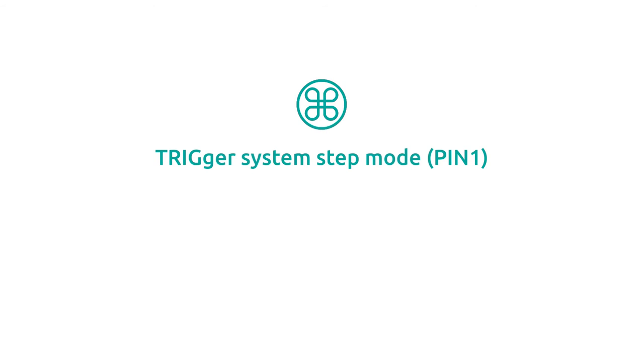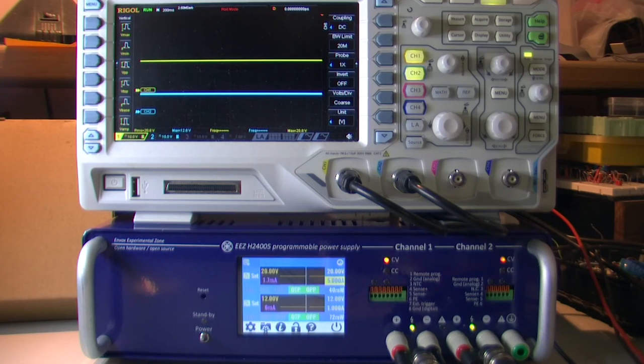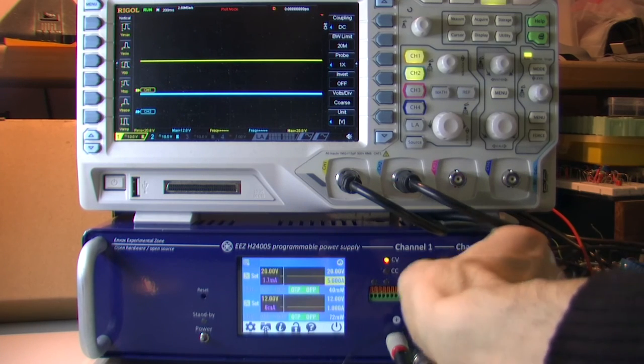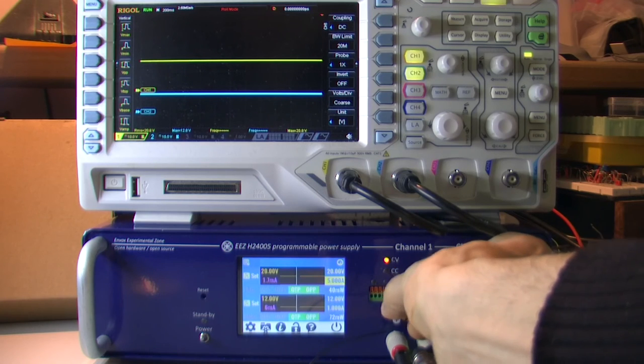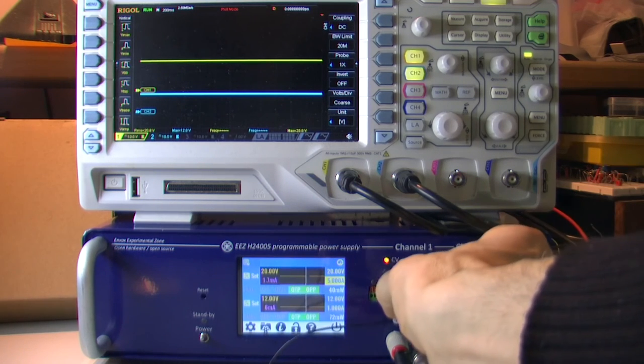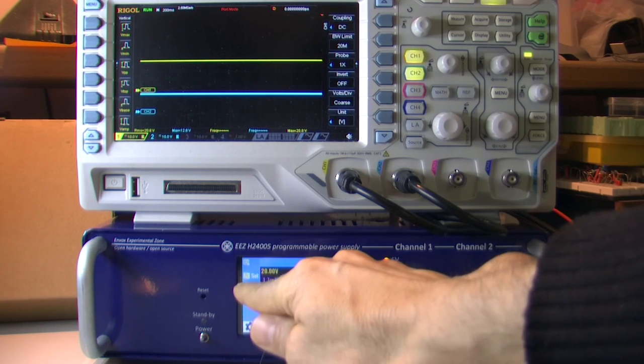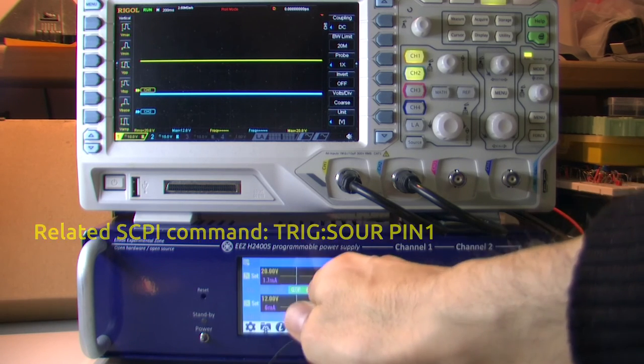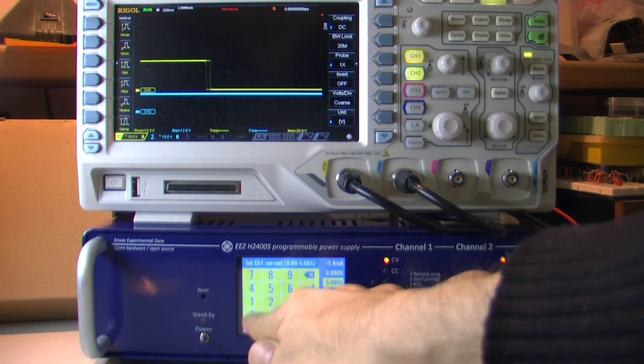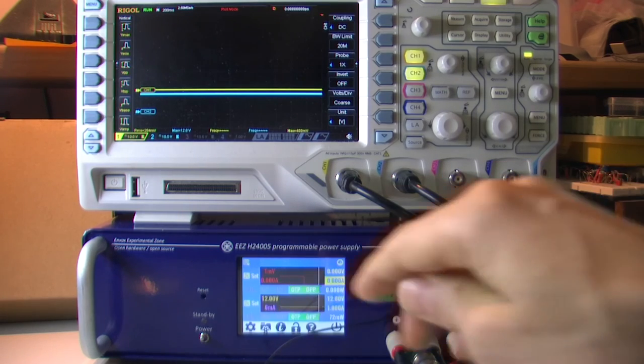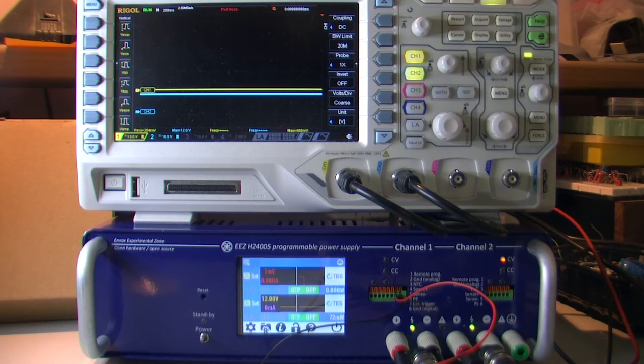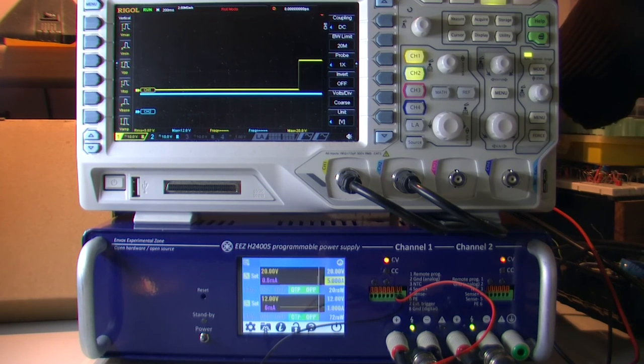If you want to use external signal for trigger we can do this. First I will connect that wires. And set here pin one. Go like this. And now on trigger we'll have again some indication that trigger is waiting. And now I just need to apply. And it's here.